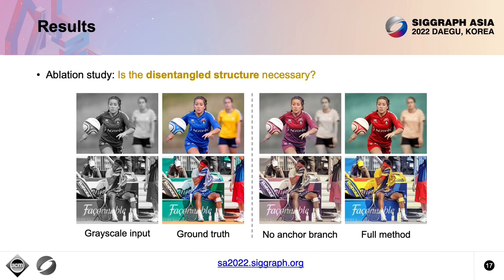To study the necessity of the disentangled structure, we construct a baseline by removing the anchor-based color modeling branch, meaning no color anchors will be used. As expected, this baseline suffers from color ambiguity and causes desaturated colors, just like existing regression models.